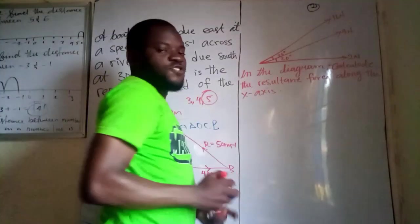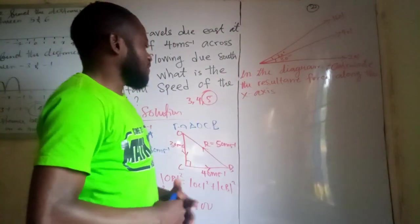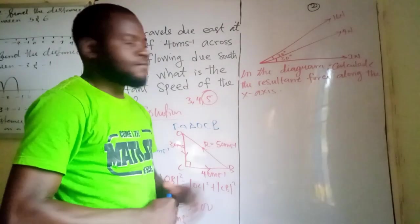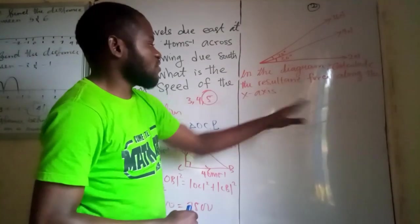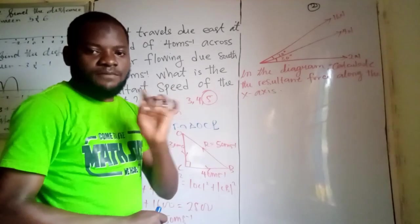Now, let's look at question two here. The question two is kind of different from question one. So we have that in the diagram, calculate the resultant force along x axis. Remember, they don't say the resultant force of the all forces.